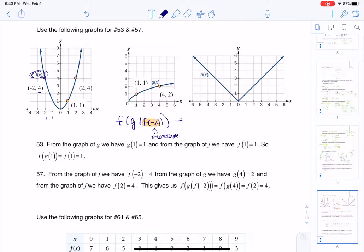So what this is going to turn into is this will become f of g of 4. So I want you to see instead of f of negative 2, I wrote 4.